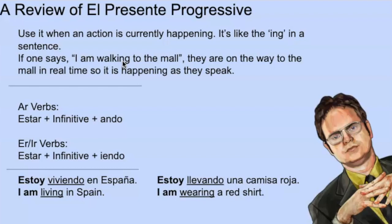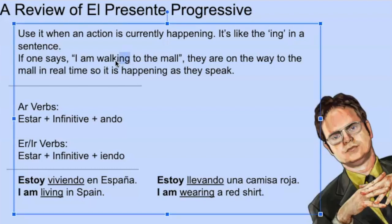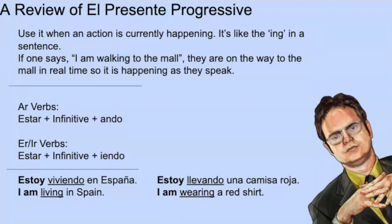You add this -ing, and that's essentially what the present progressive tense is. You make it — for -AR verbs, you use estar plus the infinitive, but get rid of the -AR and add -ando. For -ER/-IR verbs, you use estar, take the infinitive, get rid of the -ER or -IR, and add -iendo. So for example, estoy viviendo — for vivir, you get rid of the -IR and add -iendo, so 'I'm living in Spain.' Or estoy viviendo una camisa roja — 'I'm wearing a red shirt.' Basically it's conjugating estar and then adding the gerund form.